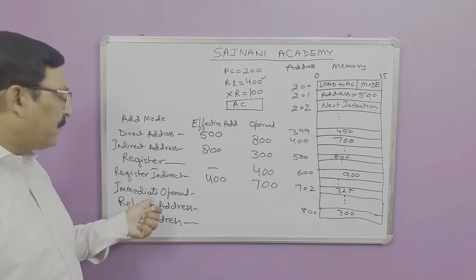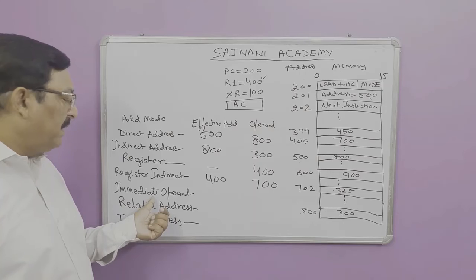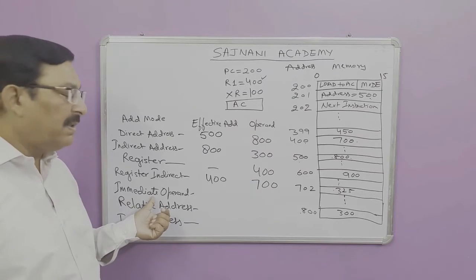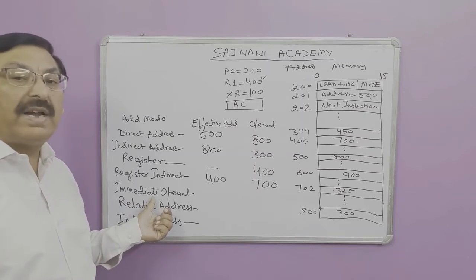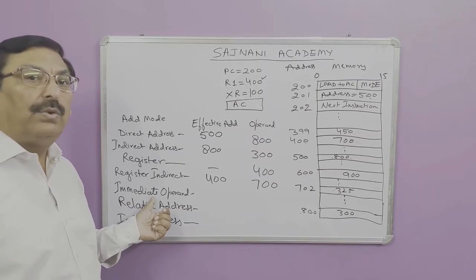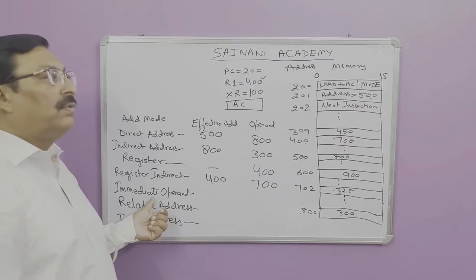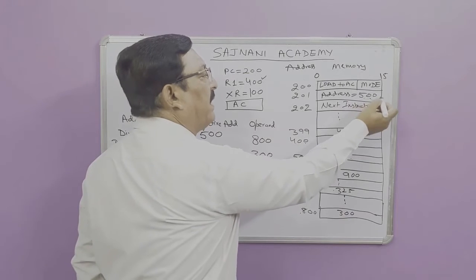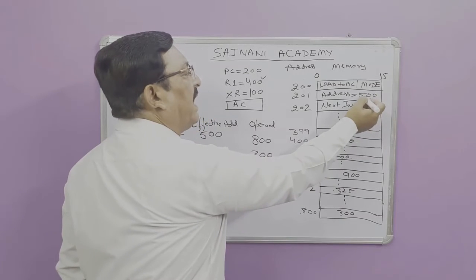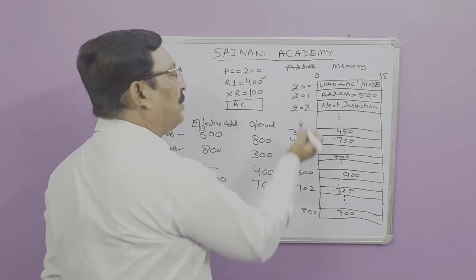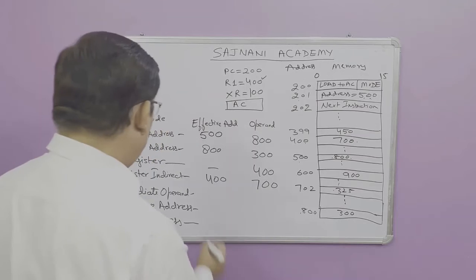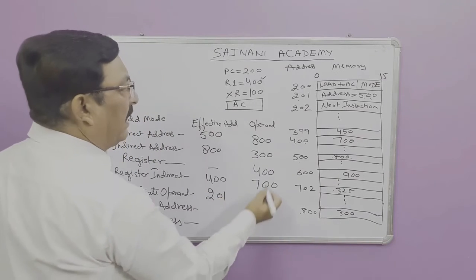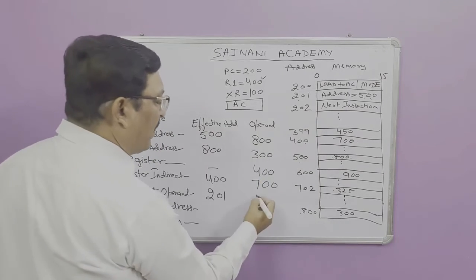In immediate mode, the instruction directly contains the operand — there is no address. So 500 is not an address; 500 is the operand itself. The effective address in this case is 201, which is the location in memory where the operand value 500 is stored as part of the instruction.